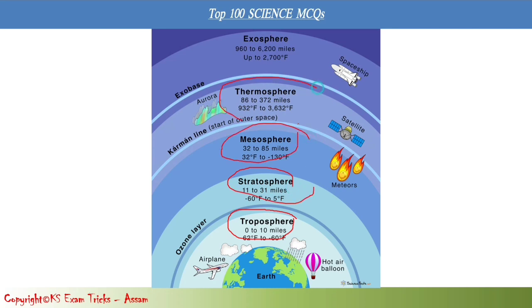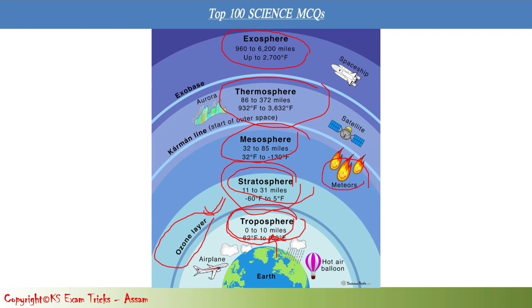The atmosphere layers are mesosphere, thermosphere, and exosphere. The ozone layer is found in the stratosphere. Satellites orbit in the thermosphere.